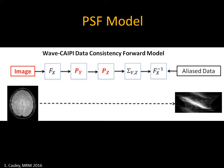To accomplish this, we formulated the point spread function model. This takes the underlying image, which is unknown, maps it through the readout Fourier transform, scales it with Y and Z specific phase, and with acceleration we get accumulation in image space. Finally, we take the inverse Fourier transform along the readout direction and match that against our aliased data. We have a forward model and observed data that together give us a metric for evaluation.